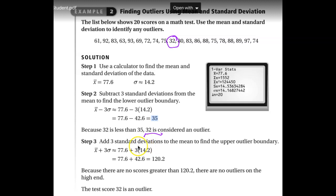Now we need to calculate the upper bound. To do that, we still need the mean and standard deviation, but this time we add three standard deviations to the mean. So that'll give us 77.6 plus three times 14.2, which equals 120.2.